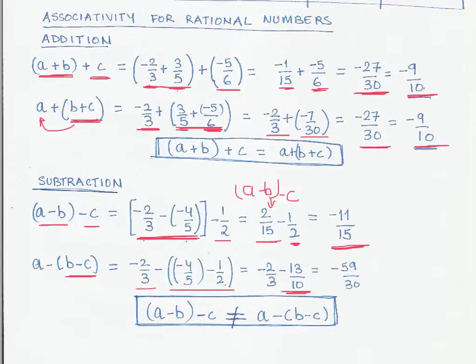And this minus two by three, which is A, is same as it is. So now, this is B minus C. The result of this, and this is A. So we are doing A minus B minus C. And when I simplify this further, we get minus 59 by 30.